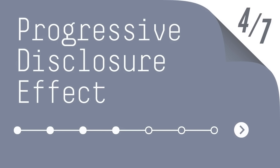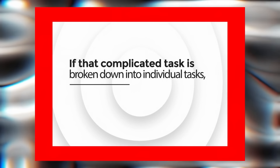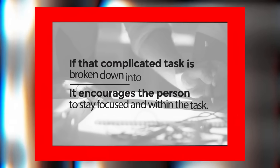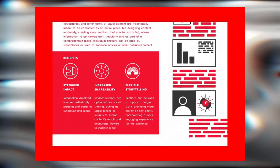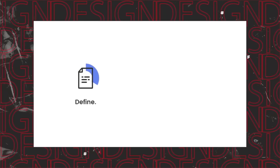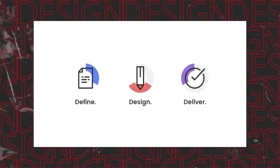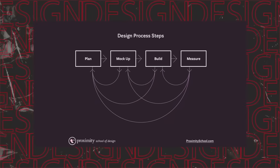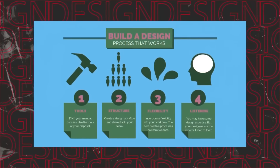The next technique is called the progressive disclosure effect. This talks about how people become overwhelmed when presented with complicated tasks. If that task is broken down into individual steps — starting simple and increasing in complexity — it encourages the person to stay focused. This can be applied to infographics, brochures, or leaflets. Breaking things down into individual components in a simple way makes the design better accepted by the viewer. You can also use this in your portfolio to show how you've solved problems for clients.